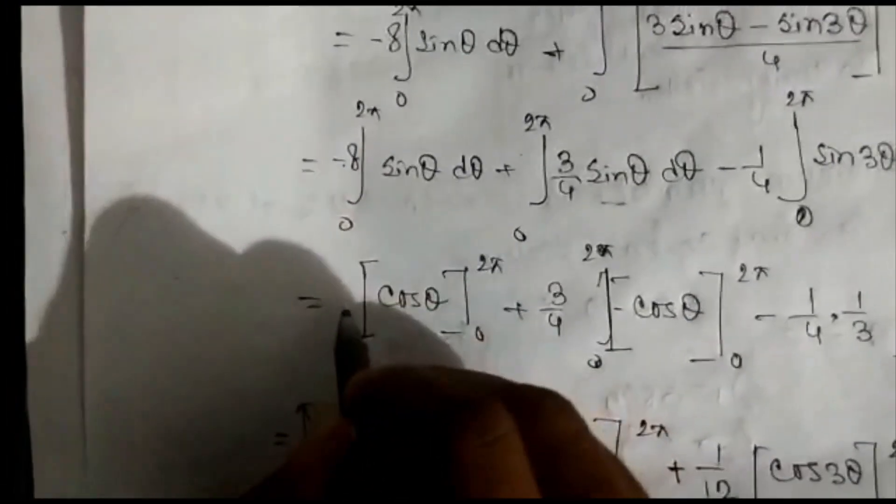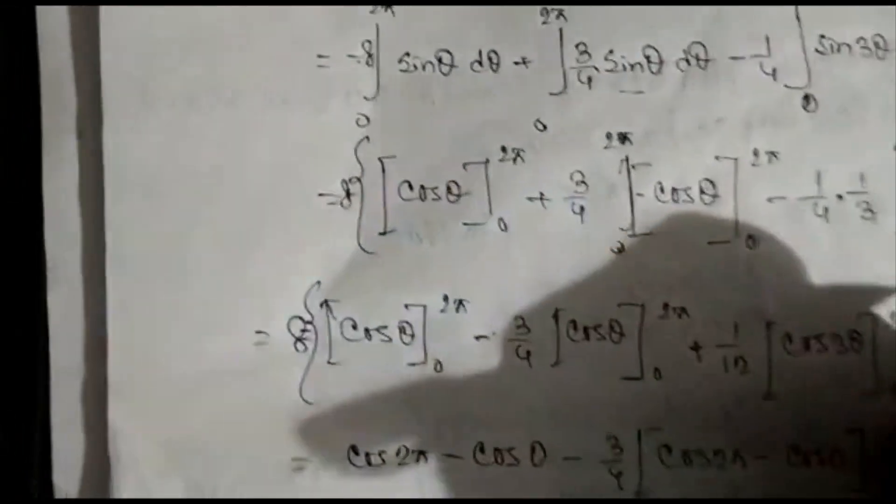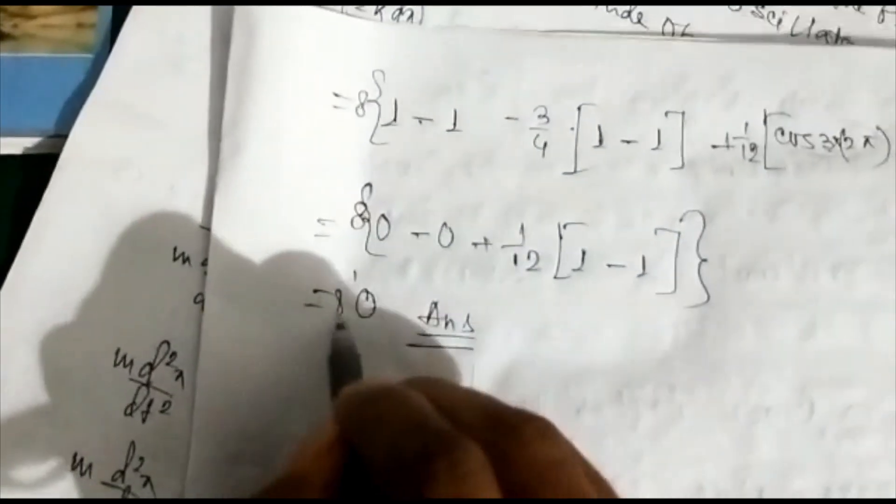With the corrected factor, the integral becomes 8 times the previous integral. However, since the previous integral evaluated to 0, multiplying by 8 gives 8 × 0 = 0. So the answer remains 0.